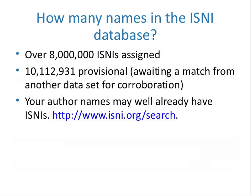How many names do we have so far? We have over 8 million ISNIs assigned to names in the database. There are an additional 10 million names awaiting a match from another dataset for further corroboration or awaiting further research. ISNIs are assigned on behalf of contributors, so it may well be that your author names have ISNIs already. It's always worthwhile to go check at isni.org/search. It's not necessarily a self-claiming system — it can be, but it's not meant to be that.